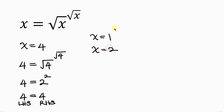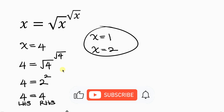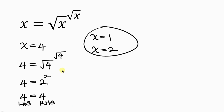So the values of x are x equals 1 and x equals 4. Feel free to share your ideas in the comment section below. If you enjoyed this video, give it a thumbs up, subscribe, and turn on the notification bell so you don't miss upcoming videos. Until next time, take care.